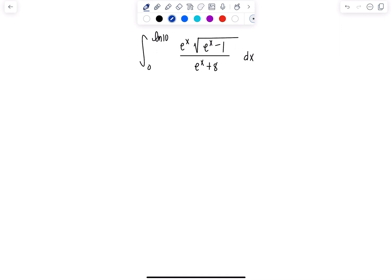We have a definite integral from 0 to natural log of 10 of e to the x times the square root of e to the x minus 1 over e to the x plus 8 dx. Pause the video if you want to give it a try on your own first, and then we can start talking.